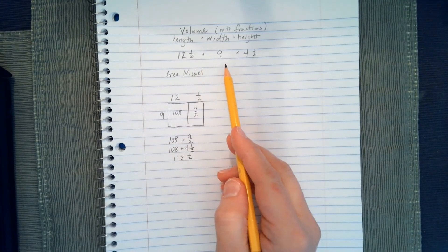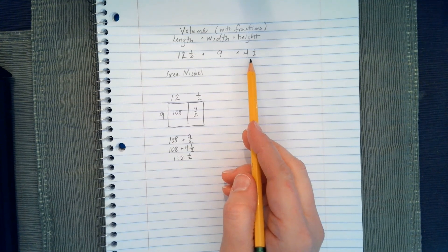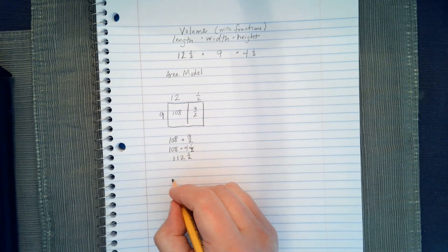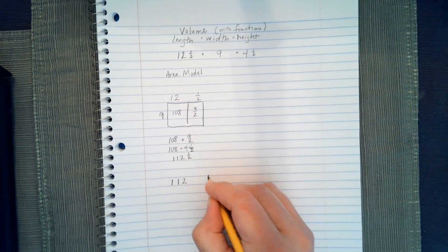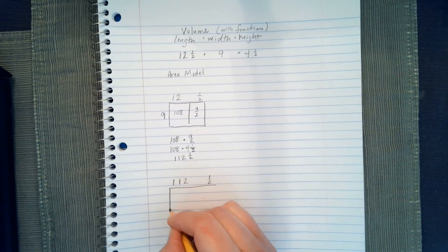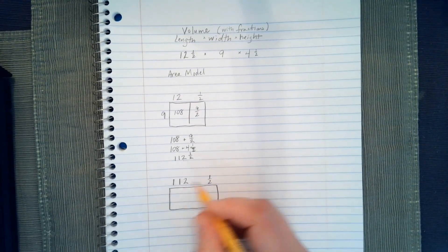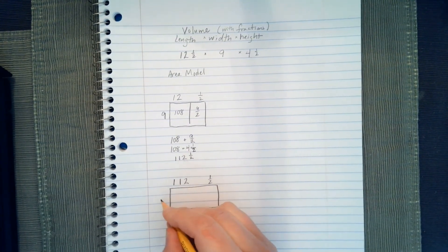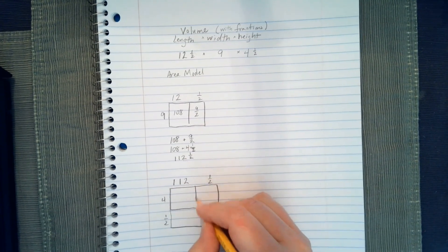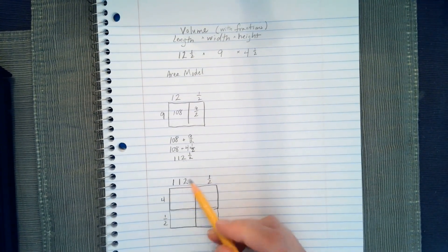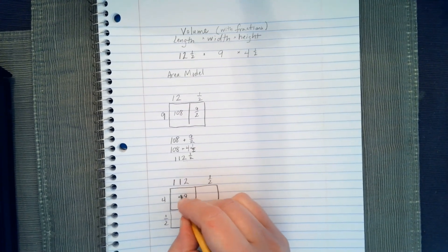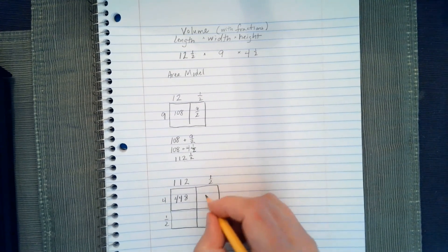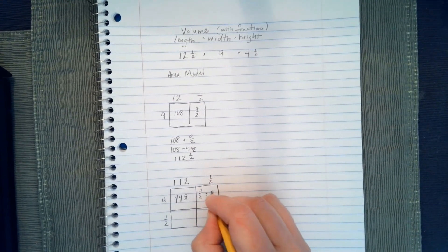This is only for the length and the width. We still have to multiply it by the height, which is 4 and a half, so I'm going to take the 112, and break it up into 112, 1 half, times 4 and a half. 4 times 112 is 448, and 4 times 1 half is 4 halves, which also equals 2.